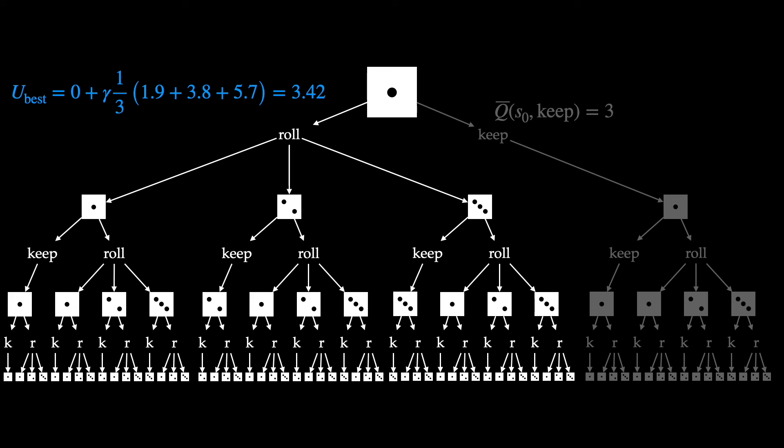That wraps up branch and bound and forward search. Hopefully the example and code together gave you useful intuition for both algorithms.